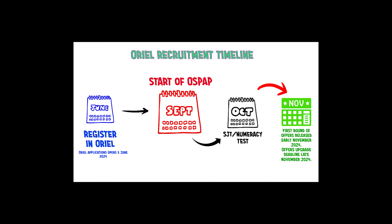So even before your OSPAP course has started, you must already be registered in Oriel. To register, you need the GPhC acceptance letter and the university acceptance letter, along with previous work experience details and reference letters — one self-reference and one from your university or employer. All of these details must be submitted in Oriel by June 2024.